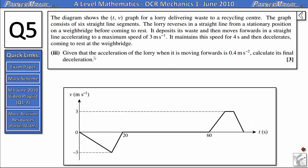Part 3 says given that the acceleration of the lorry when it is moving forwards is 0.4 metres per second squared, calculate its final deceleration. On a velocity time graph, acceleration is represented by the gradient of the line. So this 0.4 metres per second squared here represents the gradient of this line.